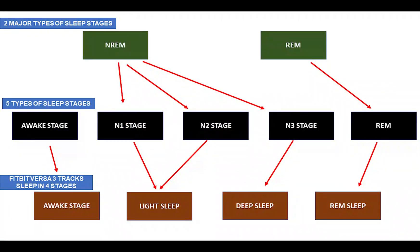Starting with the various sleep stages — according to sleep researchers there are five stages of sleep: the wake stage, N1, N2, N3, and Rapid Eye Movement, otherwise known as REM. Sleep is further divided into two major parts: NREM and REM. The NREM comprises the N1, N2, and N3 stages.